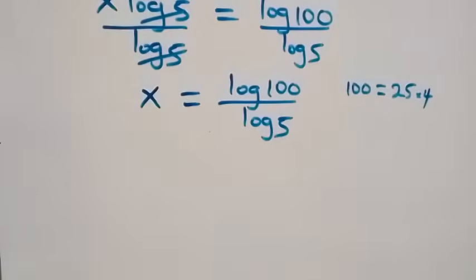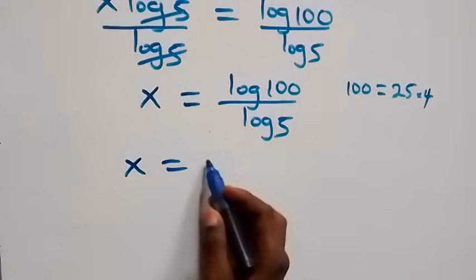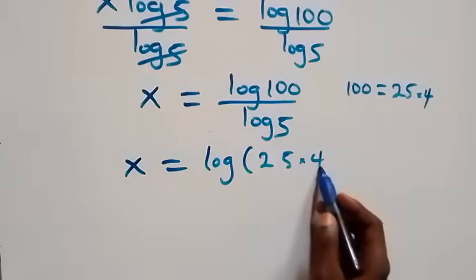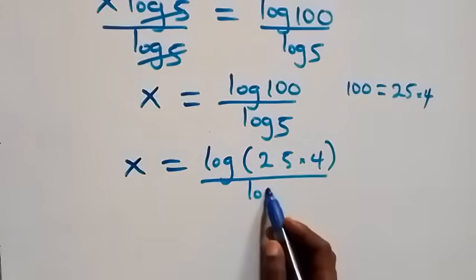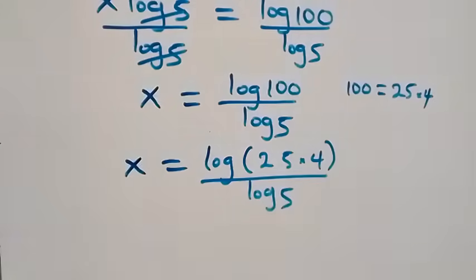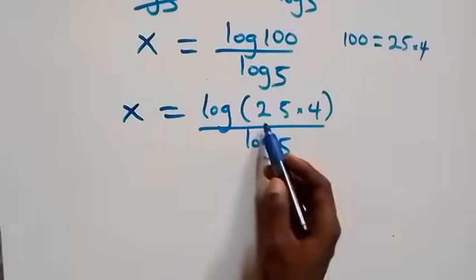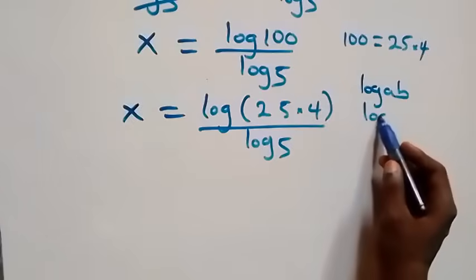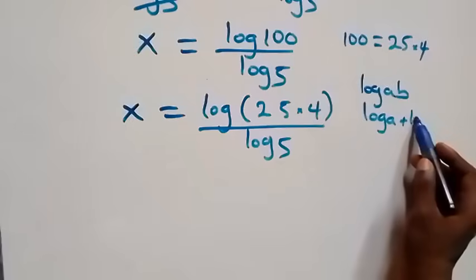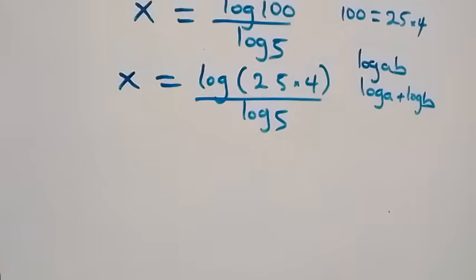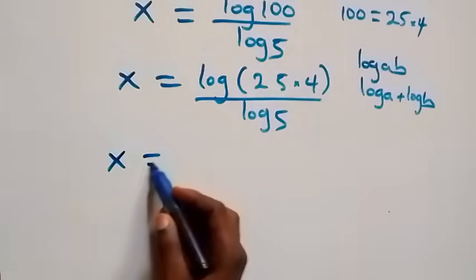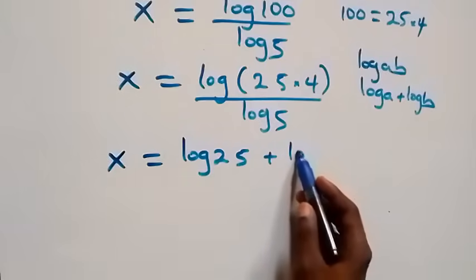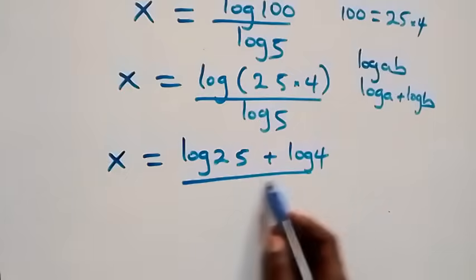From here we can express 100 as 25 times 4, so what we have becomes x equals to log(25×4) over log 5. This follows from the product law of logarithms: log(a·b) is the same thing as log a plus log b. So we have x equals to log 25 plus log 4, all over log 5.